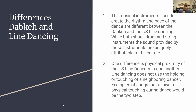The musical instruments used to create the rhythm and pace of the dance are different between Dabka and US line dancing. While both share drum and string instruments, the sound provided by these instruments is uniquely attributed to each culture. One difference is the physical proximity of dancers — line dancing does not involve holding hands or touching neighboring dancers, whereas Dabka involves holding hands or placing an arm over another's shoulder.